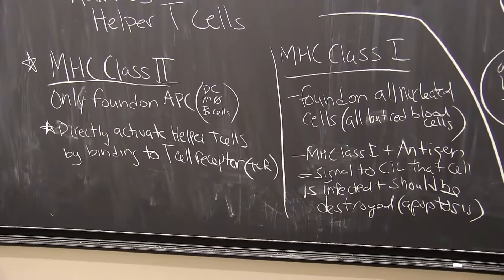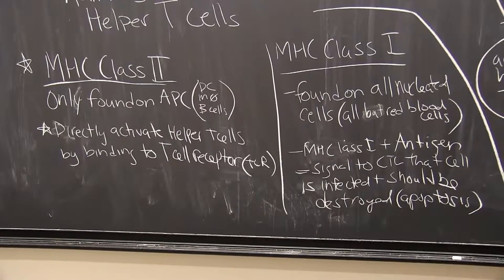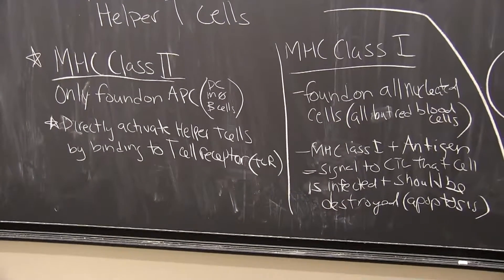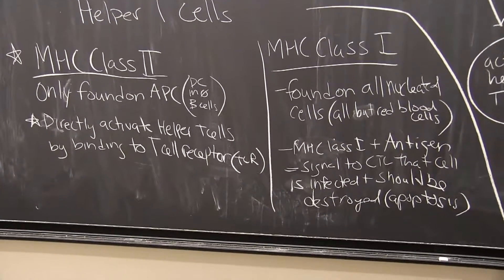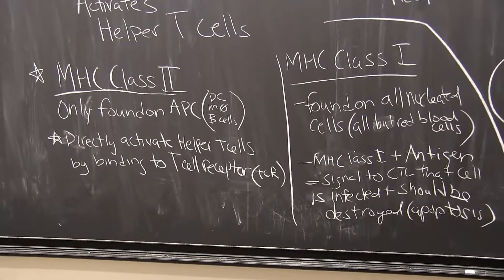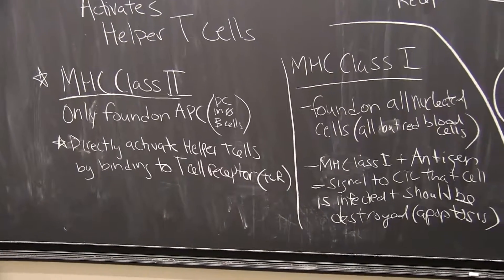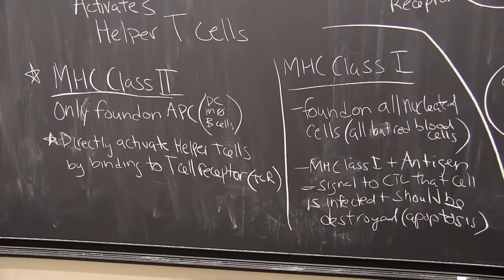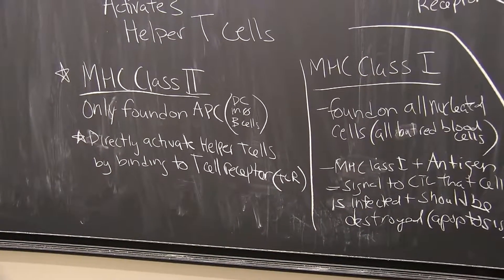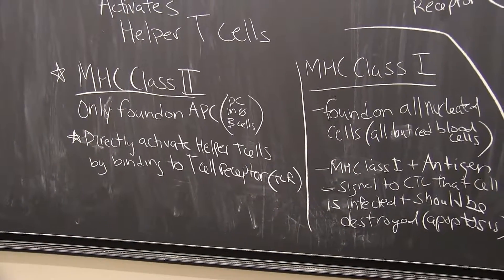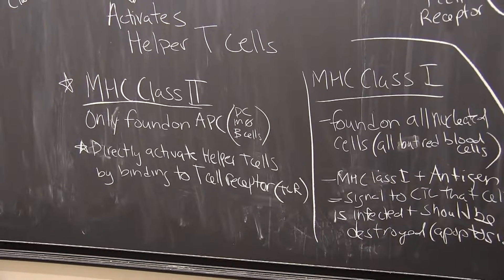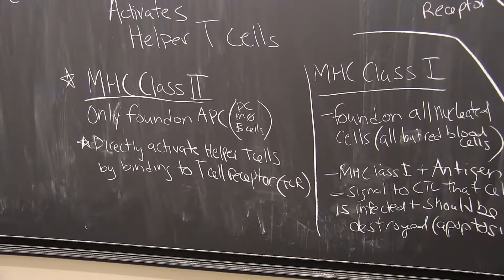MHC class 2 directly activates helper T cells by binding to the T cell receptor. Remember, it's the combination of MHC class 2 plus the specific antigen that will activate helper T cells.